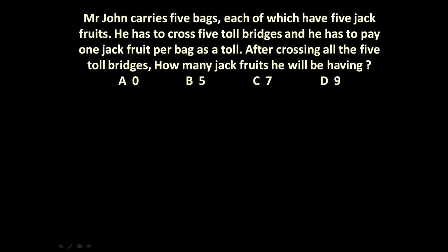The given puzzle is: Mr. John carries 5 bags, each of which have 5 jackfruits. He has to cross 5 toll bridges and he has to pay 1 jackfruit per bag as a toll. After crossing all the 5 toll bridges, how many jackfruits will he be having with him? Once again I will read the problem because it is a puzzle — we have to first understand this.